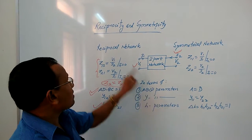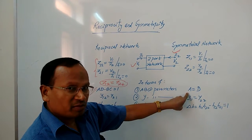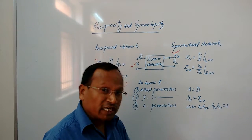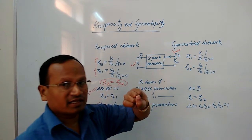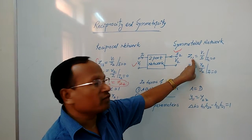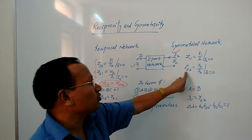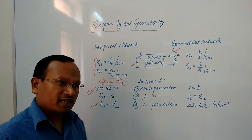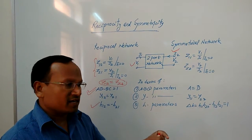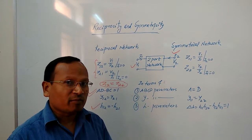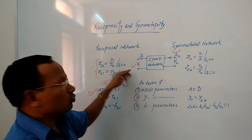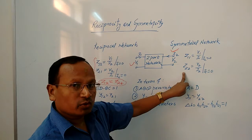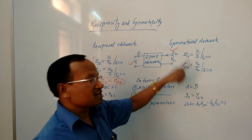Let us understand symmetricity. If the network is symmetrical, Z11 is the input impedance with output open circuit, and Z22 is the output impedance with input open circuit. If any structure is symmetrical, you see it from either side and it looks the same. In technical terms, the impedance offered by the network from either side remains the same. Therefore, the condition for symmetricity in terms of Z parameters is Z11 equal to Z22.